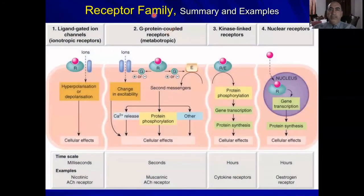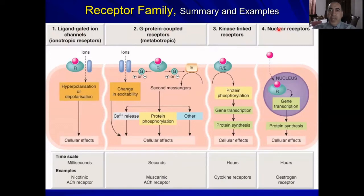The receptor family has four classes: ligand-gated ion channels, G-protein coupled receptors, kinase-linked receptors, and nuclear receptors.